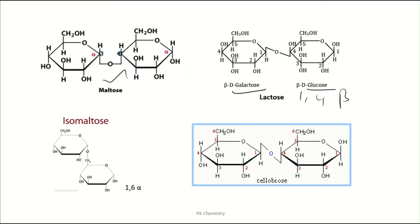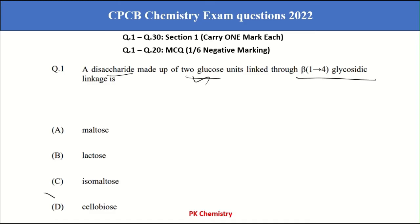So if you take isomaltose, this is 1,6 alpha. Here the cellobiose only having 1,4 beta position and our correct answer is the cellobiose is our correct answer. Answer D.